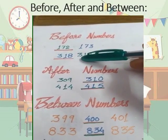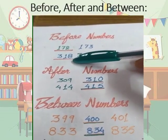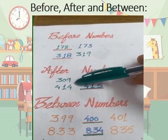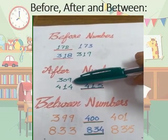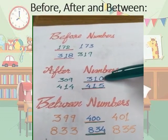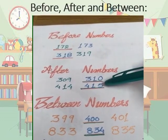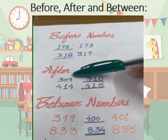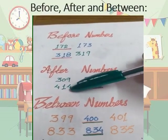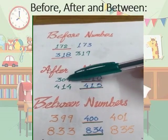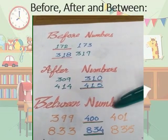In the next one, before 319 the number comes 318. For after numbers: after 309 the number comes 310, that means we add 1 to 309. And after 414 the number comes 415.